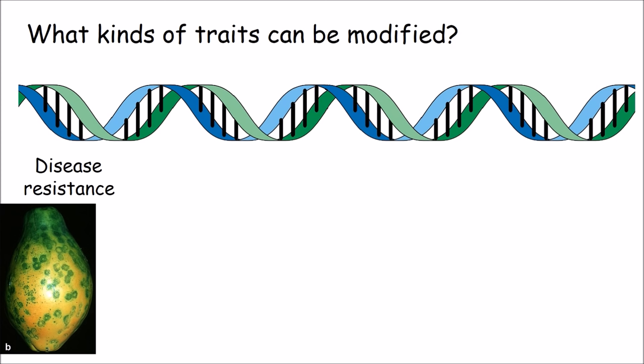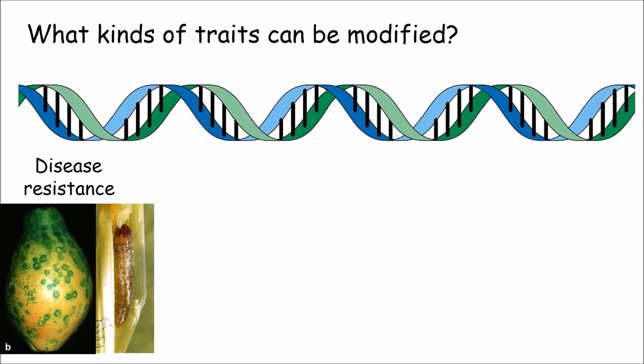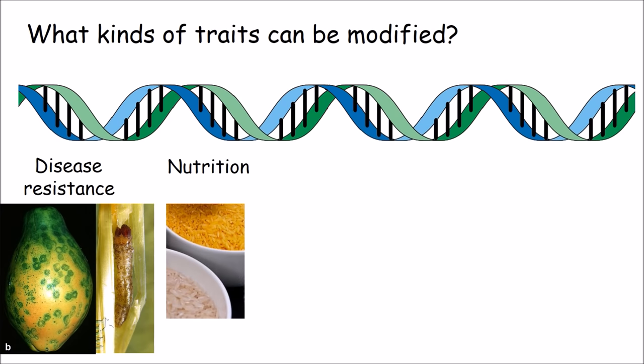Papaya ringspot virus almost wiped out papayas in Hawaii, but the expression of a ringspot protein gives sunspot papayas resistance to the virus, much like an immunization. Bt products give corn and cotton resistance to borers and bull worms, insects that drill holes in the plant and kill it. Golden rice was engineered to prevent blindness caused by vitamin A deficiency.